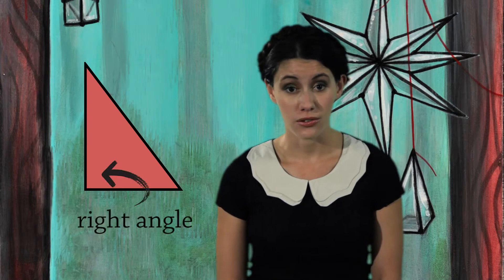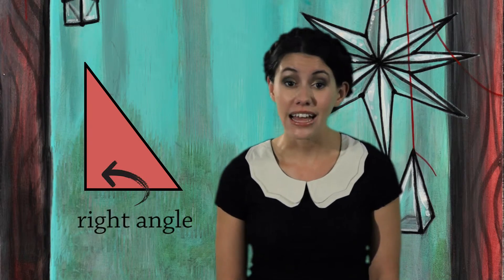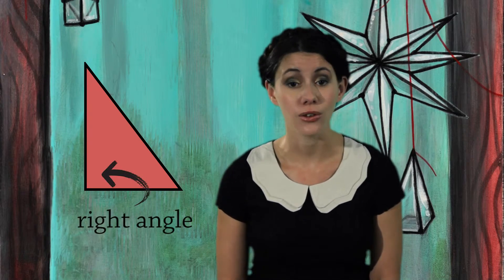A right triangle is a triangle with a right angle, a 90 degree angle. A triangle cannot have two right angles. This is because if you add up all three angles, you get exactly 180 degrees.